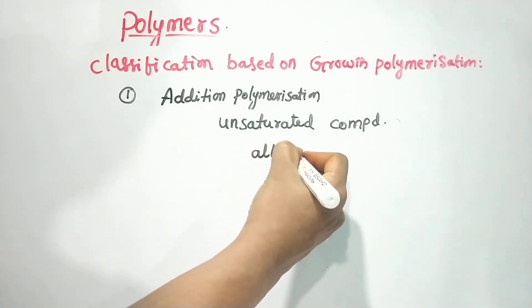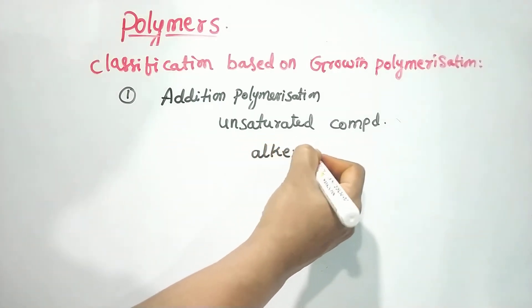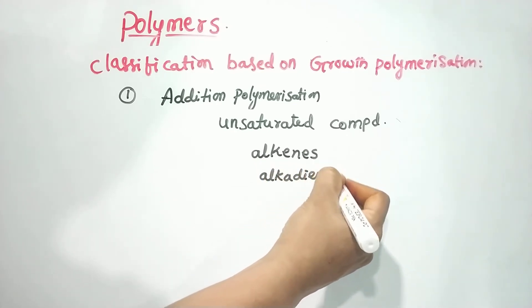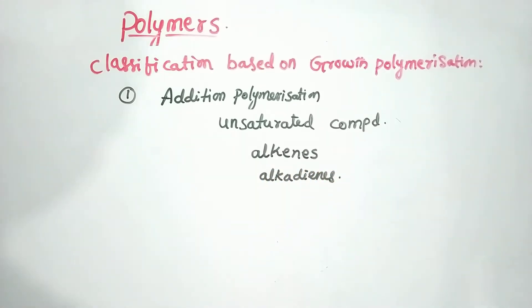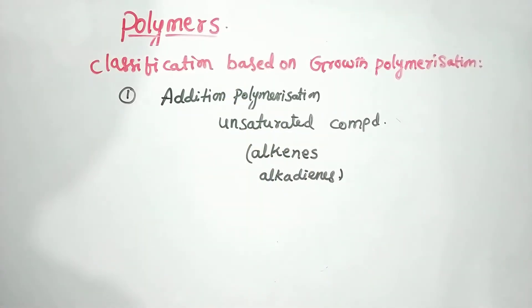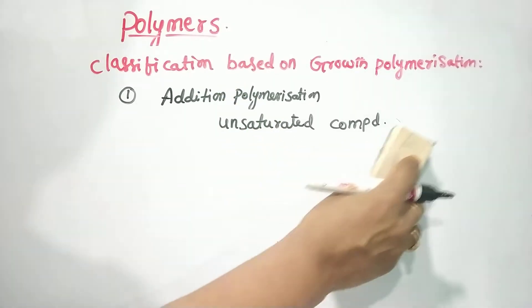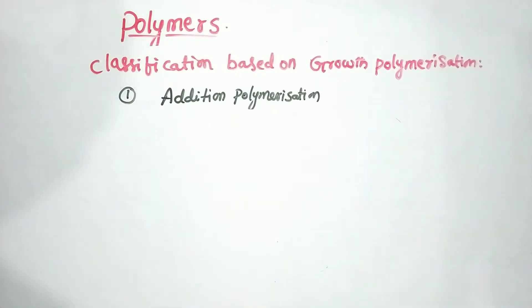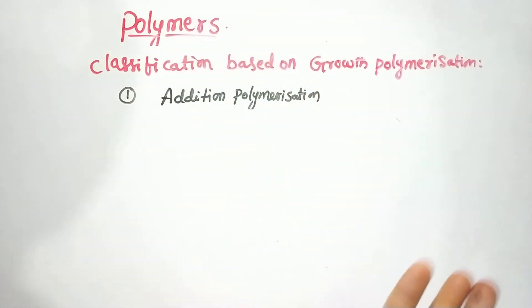For example, we use alkenes, alkynes, alkadienes, and their derivatives. We use these in addition polymerization, where chain growth increases.